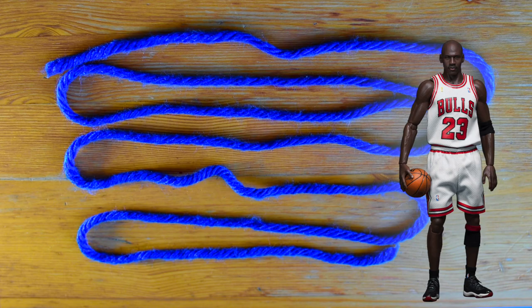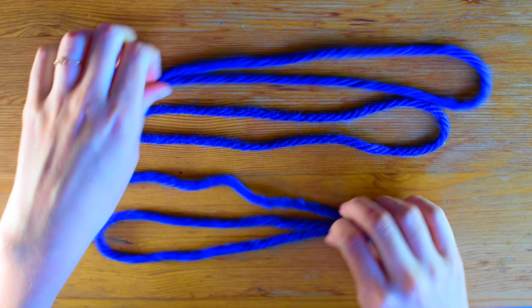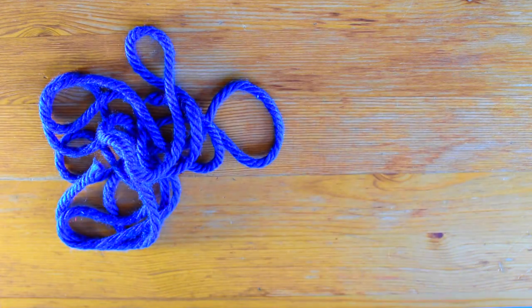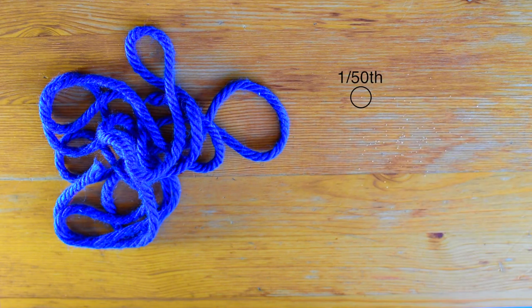So how do we fit one Michael Jordan's worth of DNA into a cell nucleus that is one-fiftieth the width of a grain of table salt?